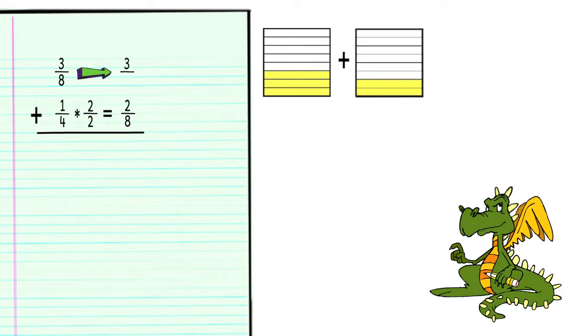Now that the fractions have the same denominator, we can add the fractions, giving us the answer 5 8ths. Okay, that problem was pretty straightforward.